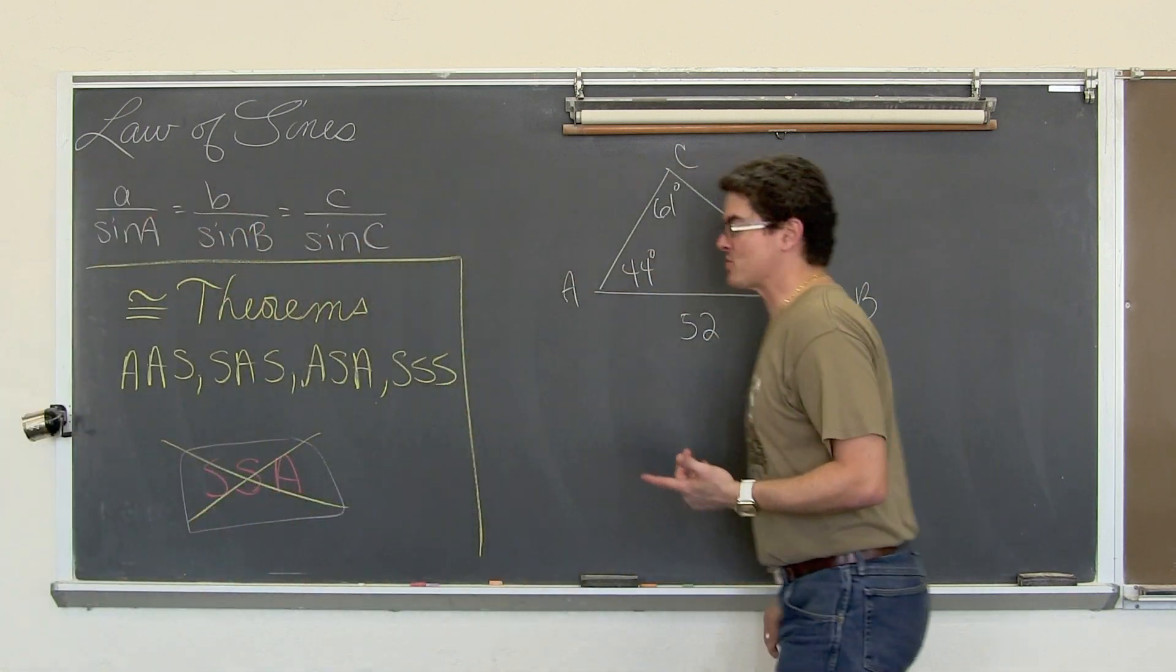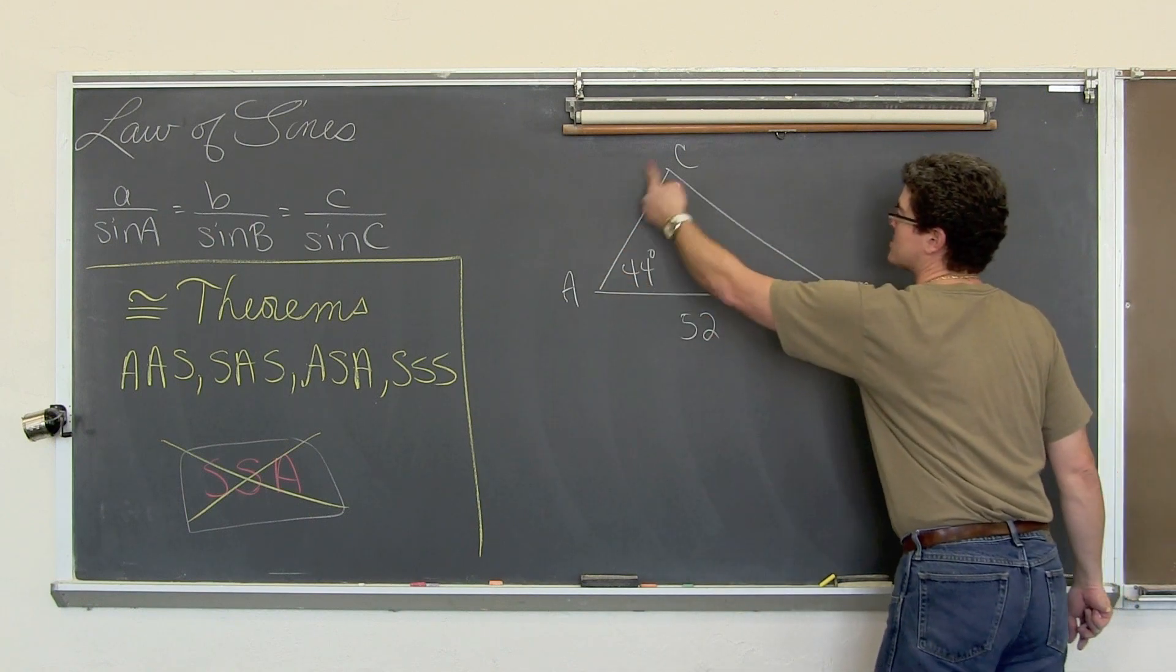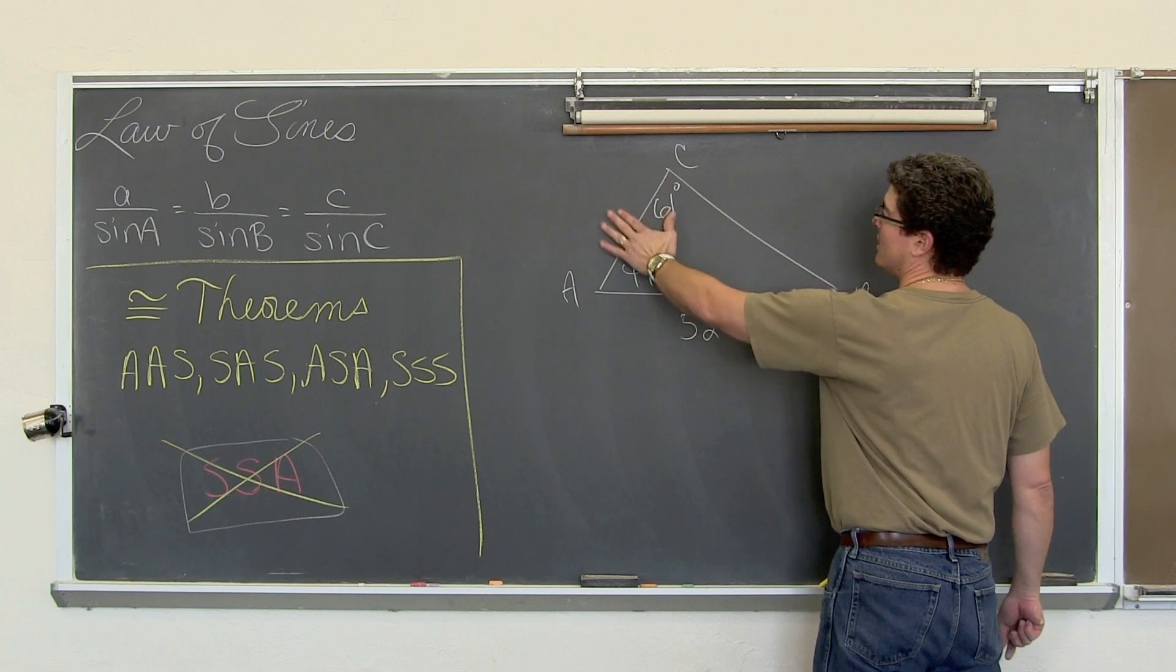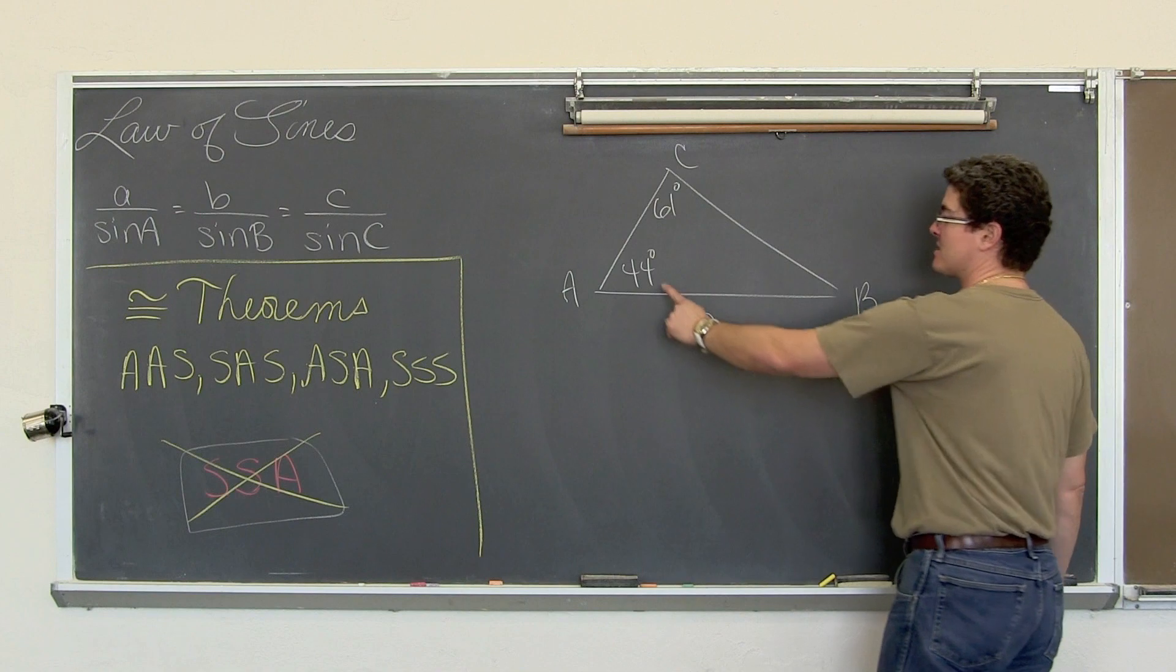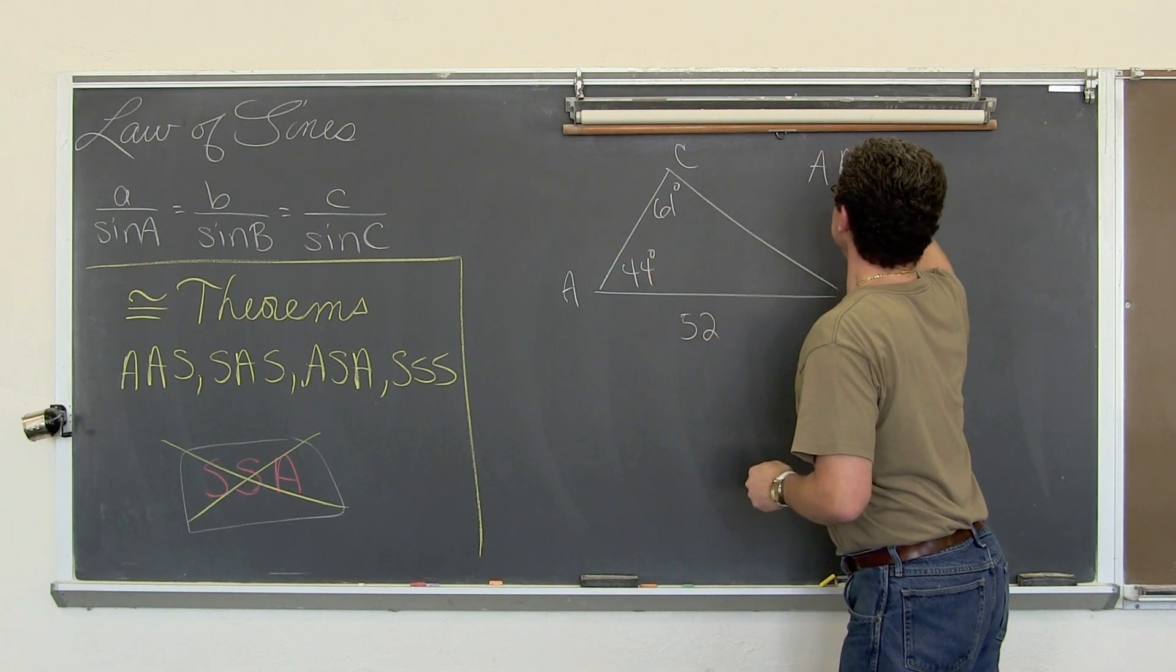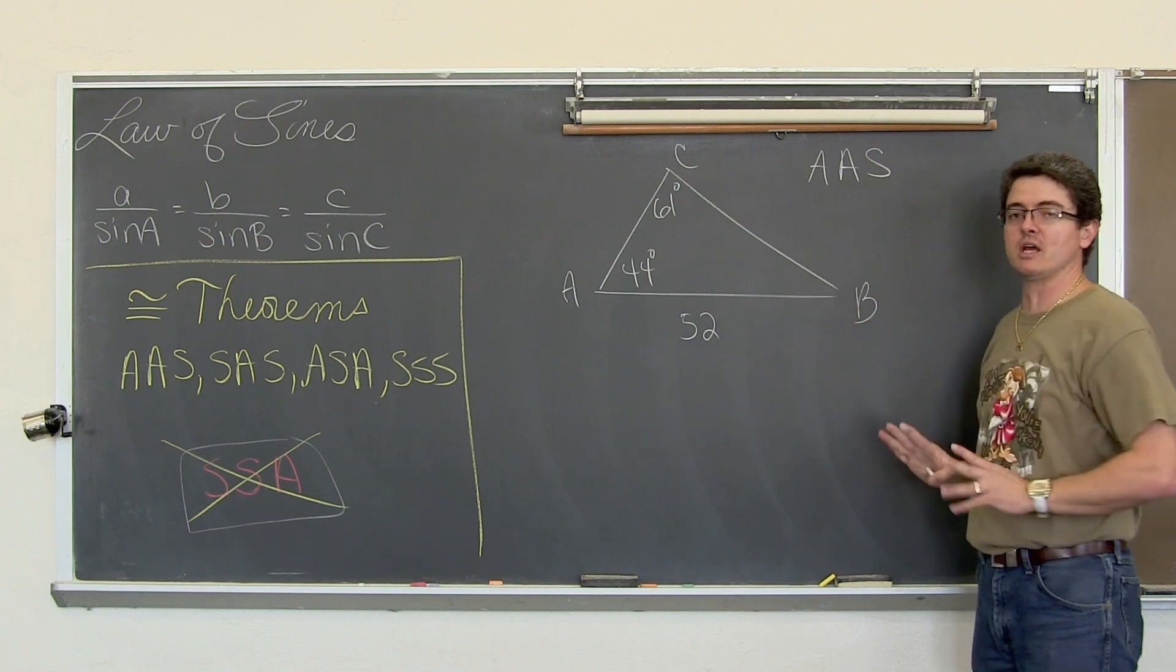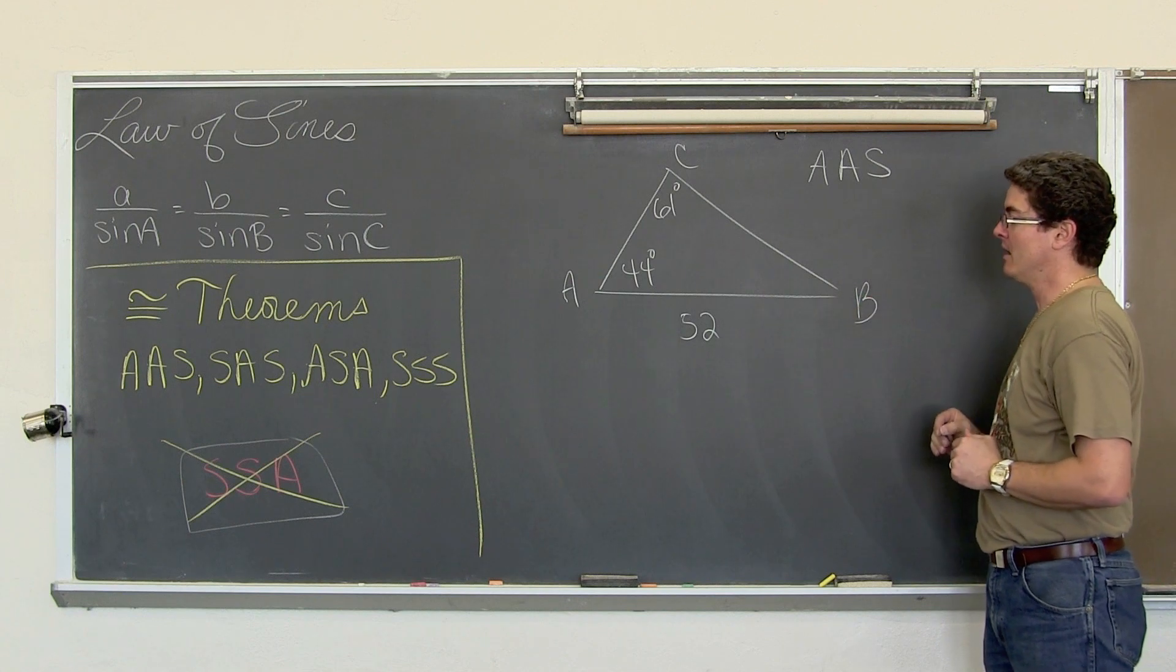As I go around this triangle and identify how the information is given to us, if I go in a counter-clockwise rotation, we have angle 61, no information given about this side here of side b, so we have angle, angle, side.